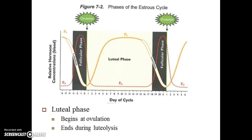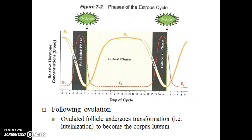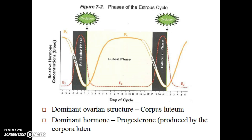The luteal phase begins at ovulation and ends during luteolysis. Following ovulation, the ovulated follicle undergoes a transformation and becomes the corpus luteum. During the luteal phase, the dominant ovarian structure that is present is the corpus luteum. The corpus luteum is the structure that is secreting progesterone. Hence, progesterone is the dominant hormone present during the luteal phase.